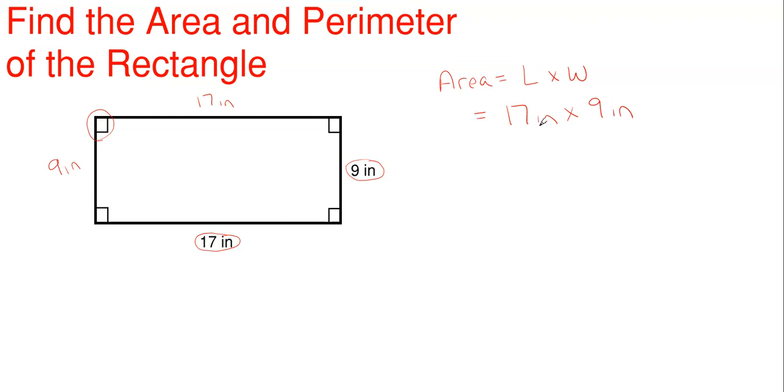Basically, the area of a rectangle is going to be your two non-equal sides multiplied together. So this total area for this rectangle is going to be 17 inches times nine inches, which gives us 153 inches squared.